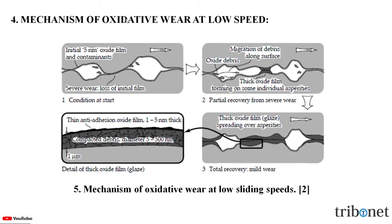Now let us understand the mechanism of oxidative wear at low sliding speeds. The process of wear at low sliding speeds is particularly effective in forming debris consisting of a finely divided mixture of oxides and metal. Wear particles are formed and successively deformed, a process which creates a continuous supply of nascent metallic surface for oxidation by atmospheric oxygen. The mechanism of formation of such particles involving wear debris, oxidation, and oxide-metal blending is shown in this figure.